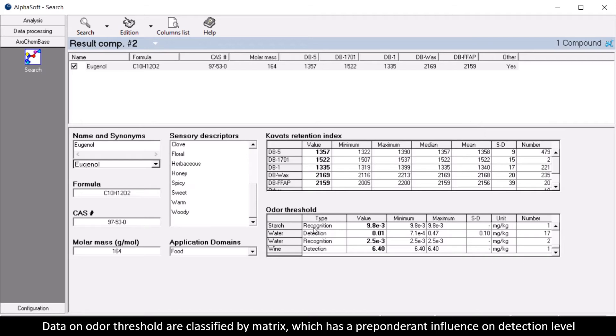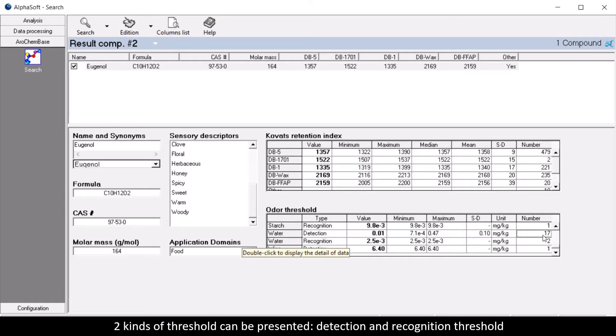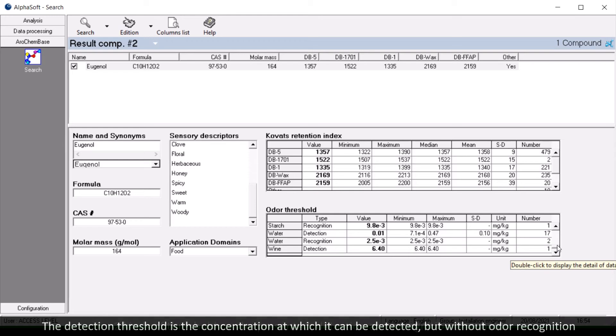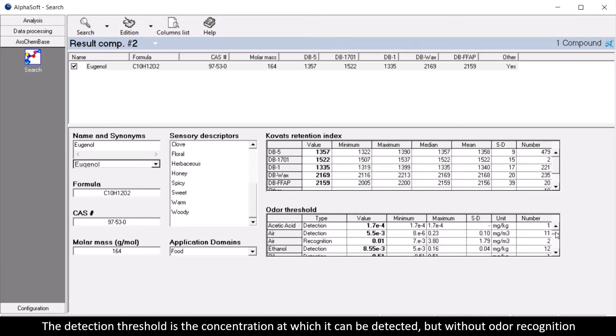Data and odor threshold are classified by matrix, which has a preponderant influence on detection level. Two kinds of threshold can be presented: detection and recognition threshold. The detection threshold is the concentration at which it can be detected, but without odor recognition.